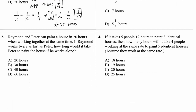Practice number two: Raymond and Peter can paint a house together in 20 hours — that is the combined time. So the combined rate is one over 20. Raymond works twice as fast as Peter.